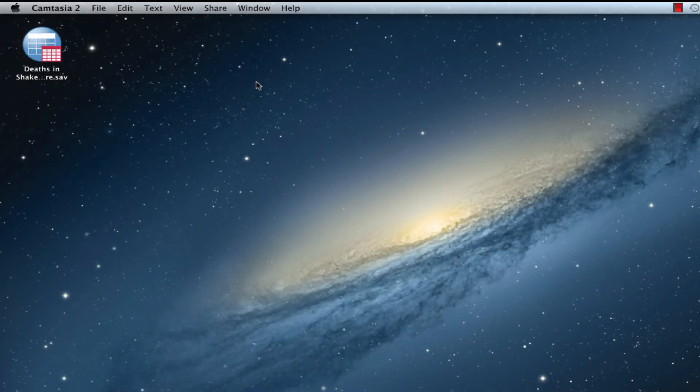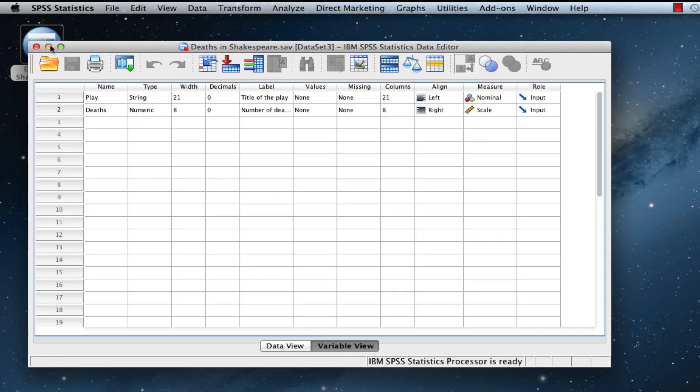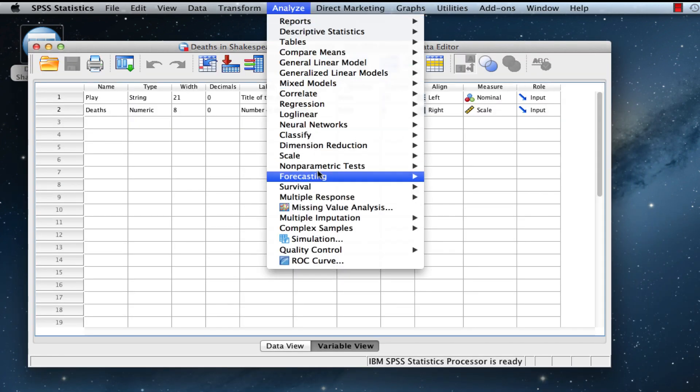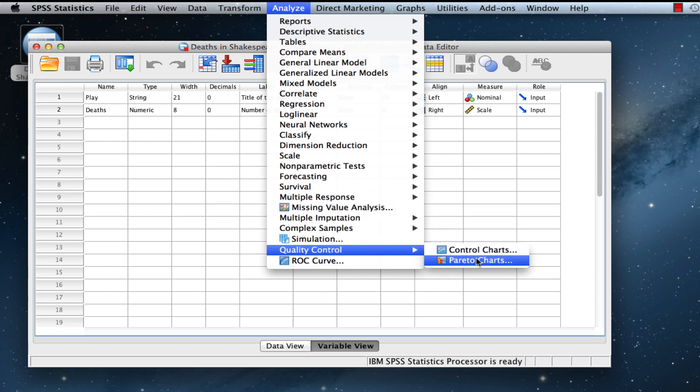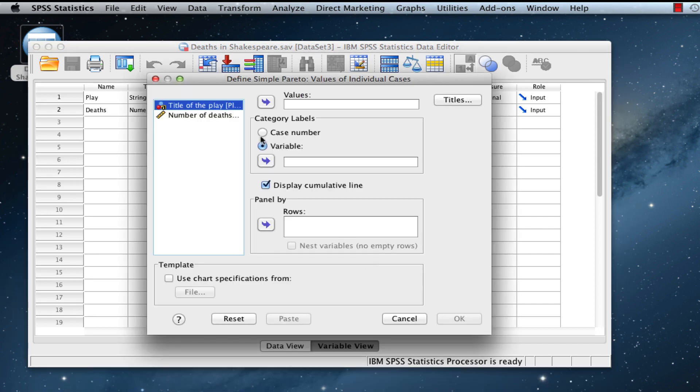To create a Pareto chart in SPSS, we will need to switch to a different data set. We'll be using the data set at deathsinshakespeare.sav. Go to Analyze Quality Control Pareto Charts. Click through Simple and Values of Individual Cases, and then Define. We're going to move the number of deaths into the Values box, and the title of the play will go under Category Labels. You should uncheck Display Cumulative Line. Now click OK,